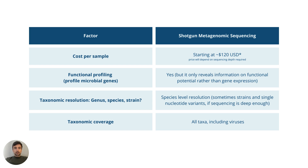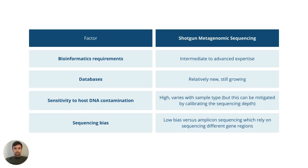The breadth and depth of taxonomic resolution should also be considered. Metagenomic sequencing, depending on the depth, can identify individual species, strains, and even single nucleotide variants of microbes, so it's important to consider what level of taxonomic resolution is required for your study. Unlike amplicon sequencing, metagenomic sequencing can identify bacteria, viruses, fungi, archaea, and other microbes, all at the same time. Shotgun metagenomic sequencing also requires intermediate to advanced bioinformatics expertise to handle the large amount of data generated, so it's important to consider if you have this expertise or where you will get it.